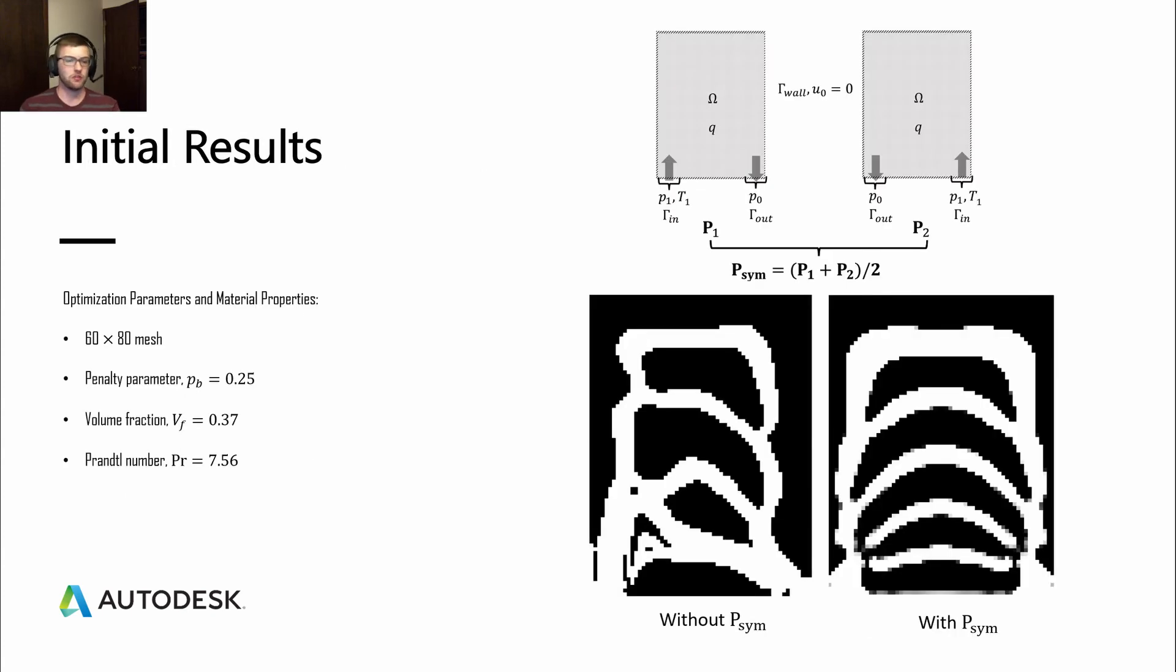Initial results of this, we see right away that if you look at the results, if you just use the first problem P1, where we have the inlet on the left, outlet on the right, you will see we get an unsymmetrical design. However, if we use it with the symmetric boundary condition, the multi-load case, we will see that we have this nice symmetric design. This was done with a 60 by 80 mesh. The penalty parameter was 0.25. The volume fraction was 0.37. And the Prandtl number was 7.56.